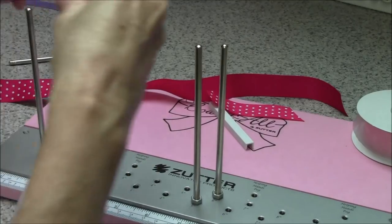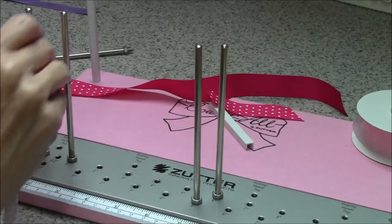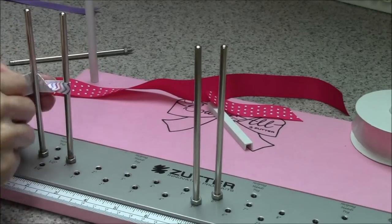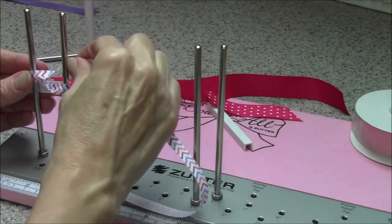This 3/8 inch chevron printed grosgrain makes an adorable little 1 inch bow. Lock this down. I go for like two loops on each side again so it doesn't get too bulky because this is a small bow.